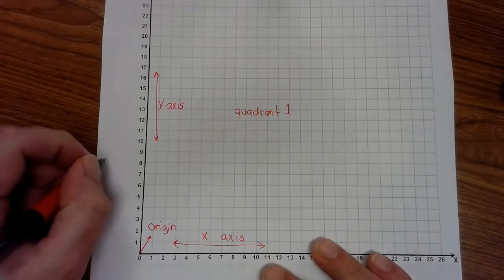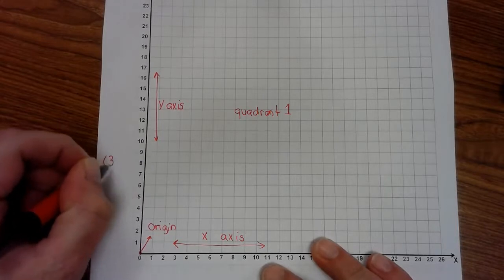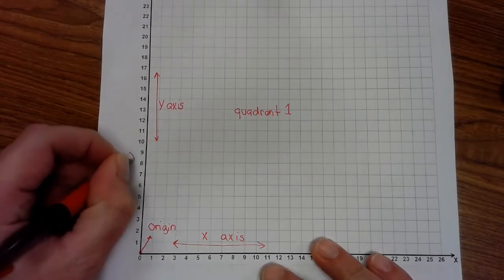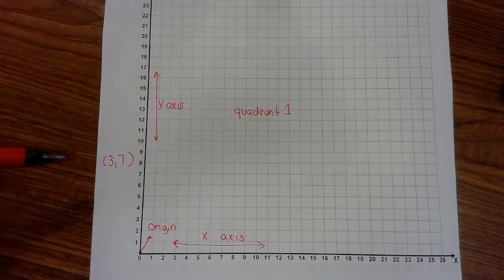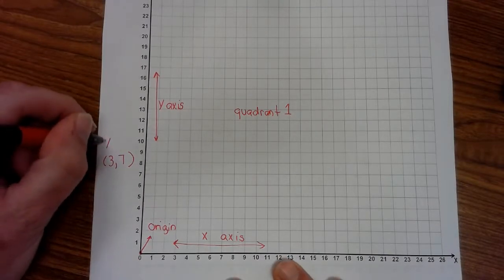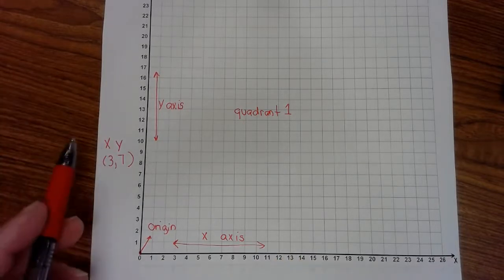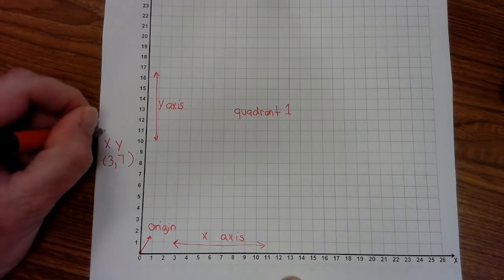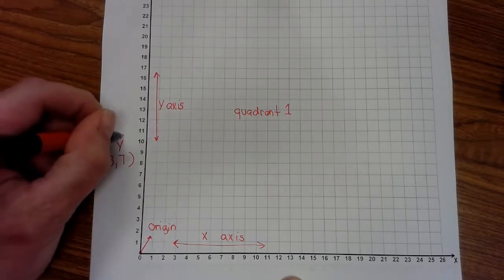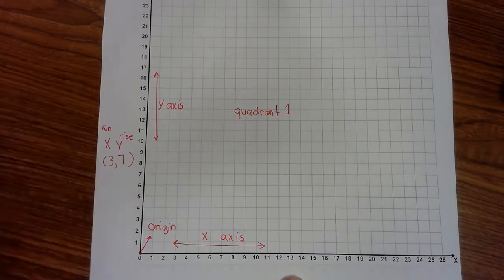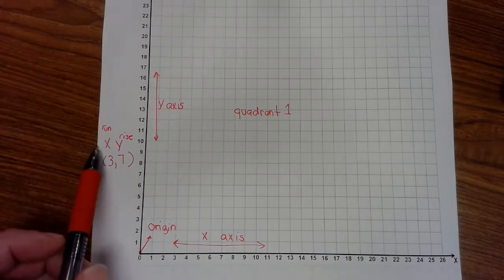When we're dealing with coordinate planes or coordinate grid, you're always going to be given what's called an ordered pair. You'll be given two numbers, as such, 3 and 7. The first number is always x and the second number is always y.